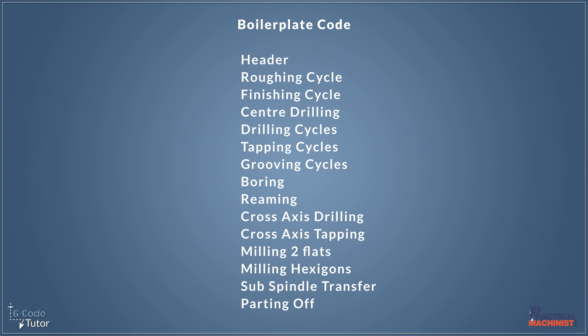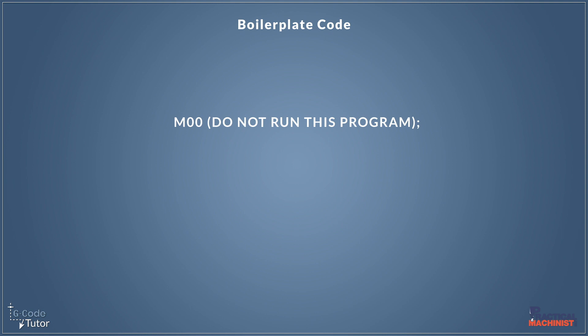When we have a program saved in our machine that is just a collection of different sequences, we do not want to run this program because it's not designed that way — it's designed to use each sequence separately and not as a whole. So we need to ensure that no one tries to run this program in our machine. I would advise locking the program off if possible, or adding M00 and an operator's note at the very beginning saying 'please do not run this program.' This ensures the safety of our machine, because we're just looking at a selection of sequences that we can copy and paste and edit to speed up our G-code programming.